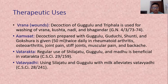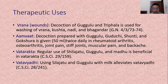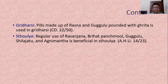Therapeutic uses: for Vrana or wounds, decoction of Gugul and Triphala is used for washing wounds, Kushtha, Nadi and Bhagandar. For Amavata or Arthritis, decoction prepared with Gugul, Guduchi, Sunthi and Gokshura is given in the dose of 50 ml twice daily in rheumatoid arthritis, osteoarthritis, joint pain, stiffness of joint, muscular pain and backache. For Vatarakta or Gout, regular use of Shilajatu, Gugul and Madhu is beneficial. For all types of Vatavyadhi, Gugul with milk alleviates the condition. For Gridhrasi or Sciatica, tablets prepared with Rasna and Gugul with ghee are used. For Sthaulya or Obesity, regular use of Rasanjana, Gugul, Shilajatu and Agnimantha is beneficial.